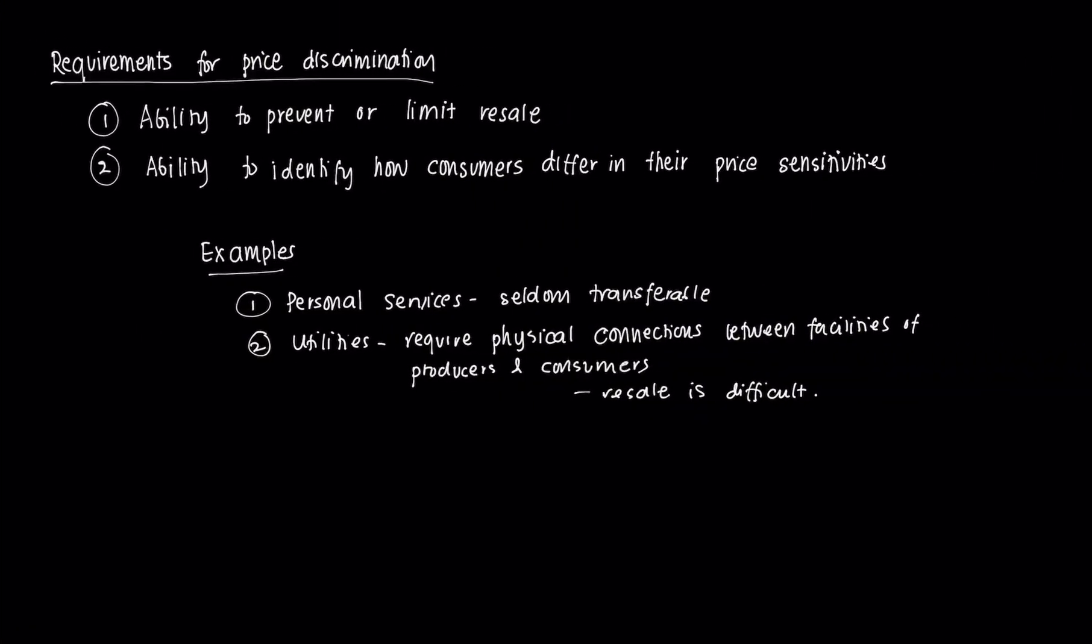There are a couple of requirements. The first is that the monopolist must have the ability to prevent or limit resale. For example, if it engages in first-degree price discrimination and charges a different rate based on the maximum willingness to pay of each consumer, consumers who buy it for cheap have the incentive to sell that good they obtained from the monopolist at a low price to those consumers paying the monopolist a high price. They could act as a middleman and reap the profit from that. So a monopolist would need to limit that feasibility of any form of resale.